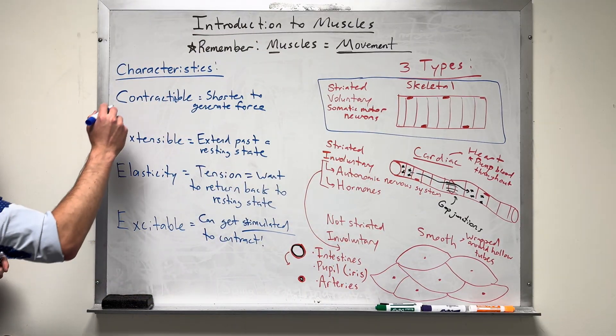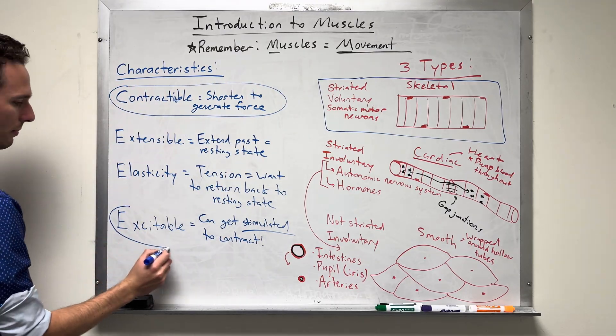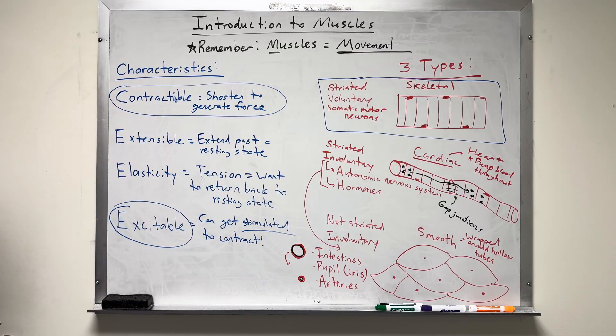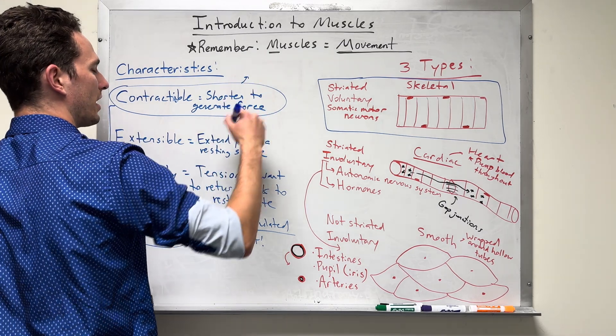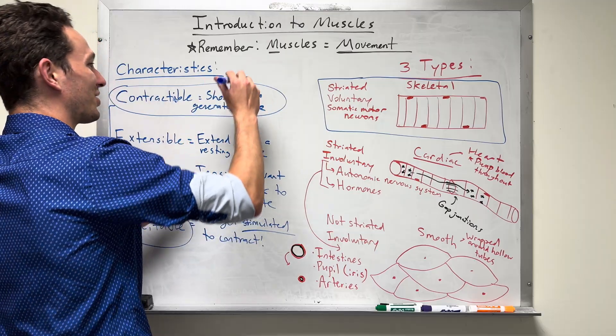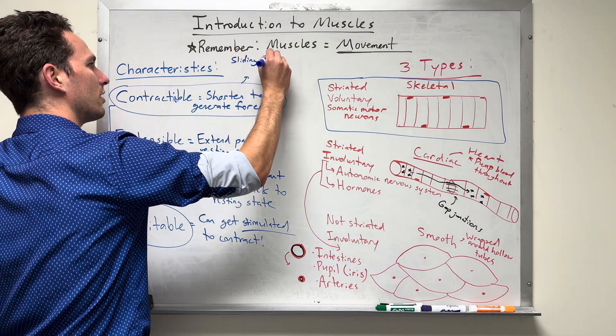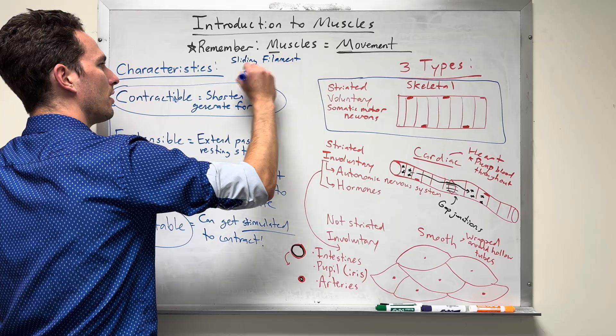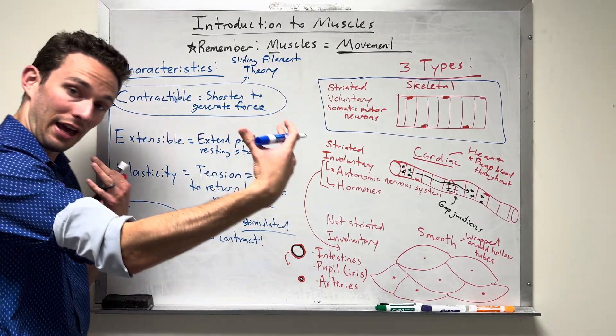I want to circle two: contractability and excitability. These are the two main things we're going to focus on. Contractability is going to be explained by a theory, which we know is true, called the sliding filament theory. Sliding filament theory is going to explain how our muscles contract, how they shorten.